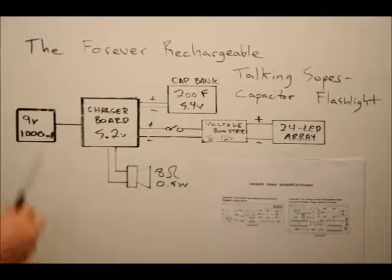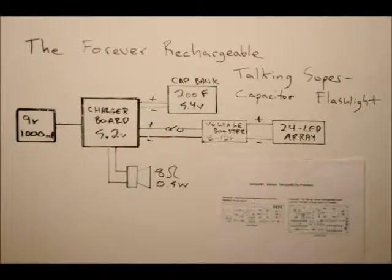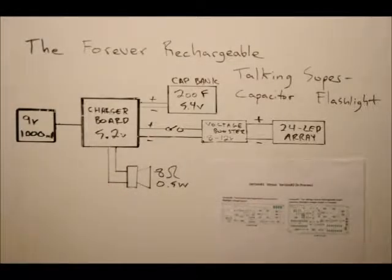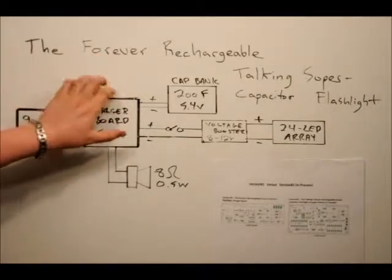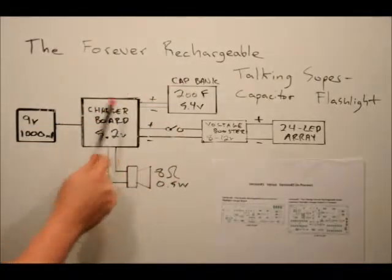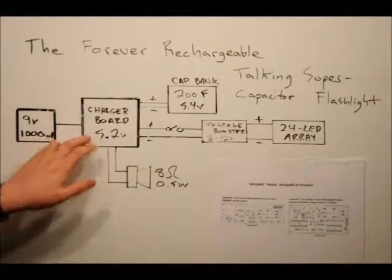This is the block diagram. 9-volt, 1-amp adapter plugs into the charger board. As soon as that happens, the onboard LED flashes three times, and the device says flashlight charging. Power is applied to the 200-farad, 5.4-volt capacitor bank. It's actually two 400-farad, 2.7-volt capacitors in series. It charges to about 5.2 volts before completely isolating the charger and the capacitor bank, so there's no back-powering through the system. When the capacitor bank is done charging, the LED will flicker three times as well.